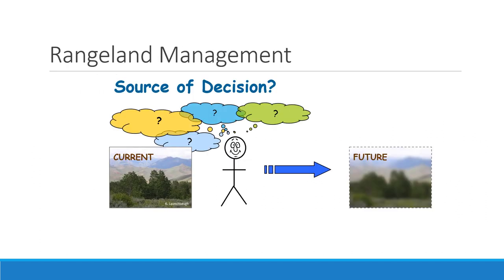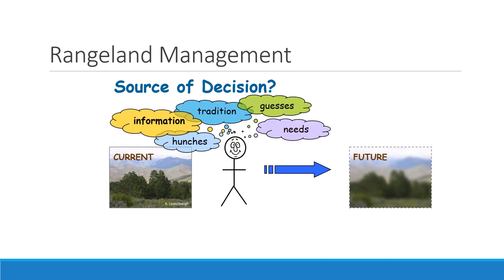Range management is this idea that you understand where you're at and you try to make decisions that will take you to the future. Where do those decisions come from? If you're a range manager, where do you get the ideas that help you make wise decisions to get to the desired future? Certainly information is a big part — hopefully from classes, books, or seminars. But there's a whole lot of other ideas in your head when you make a decision that have nothing to do with science-based information.